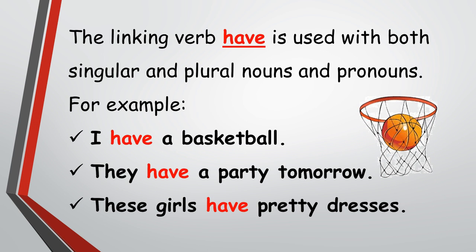The linking verb 'have' is used with both singular and plural nouns and pronouns. For example: 'I have a basketball,' 'They have a party tomorrow,' 'These girls have pretty dresses.' In these examples, I, they, and these girls are the subjects, and a basketball, a party tomorrow, and pretty dresses are the information. 'Have' is used with singular pronoun 'I,' plural pronoun 'they,' and plural noun 'these girls.'